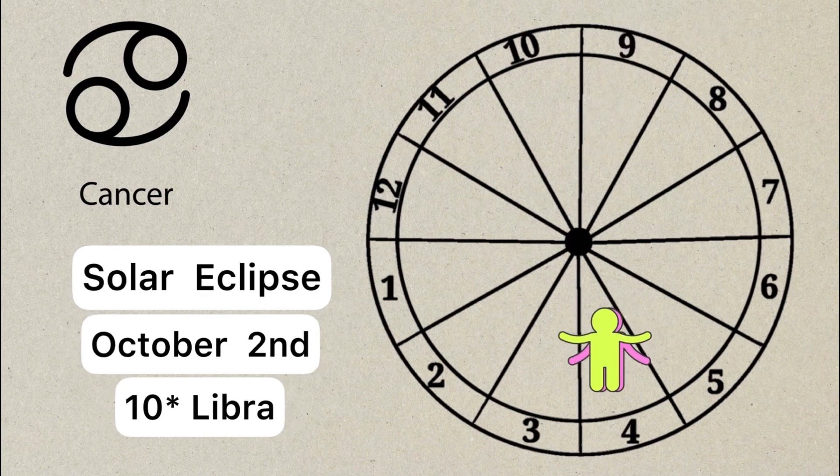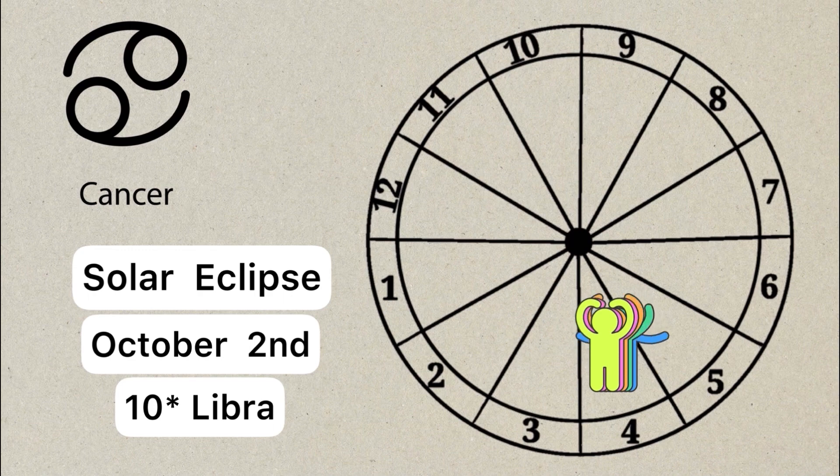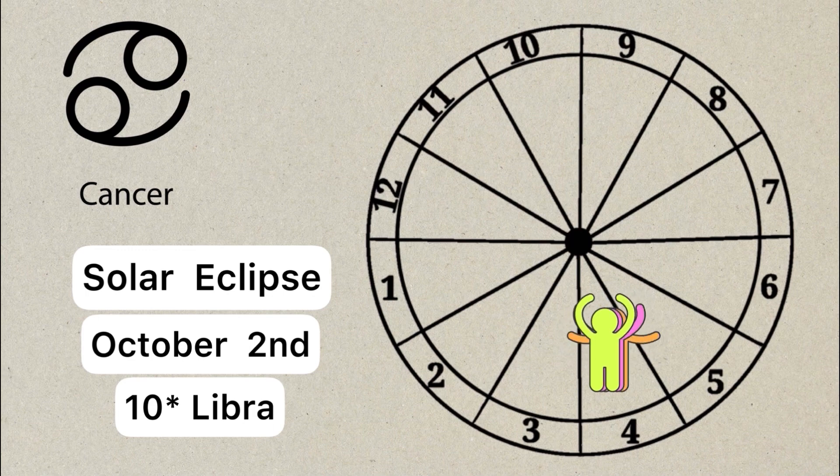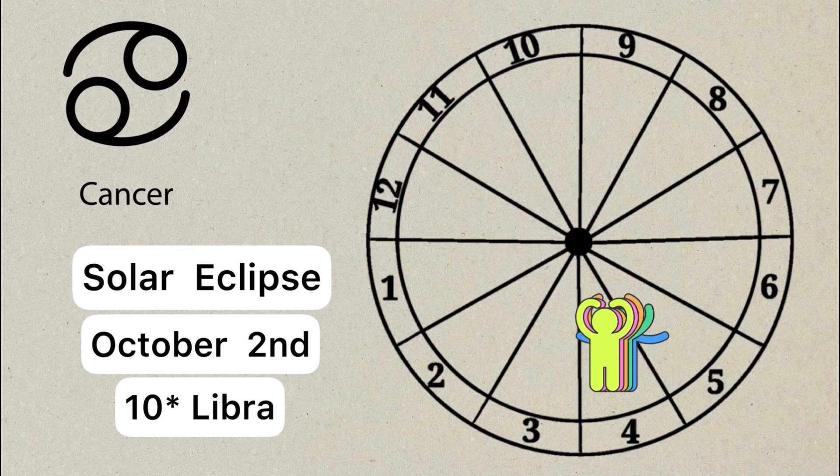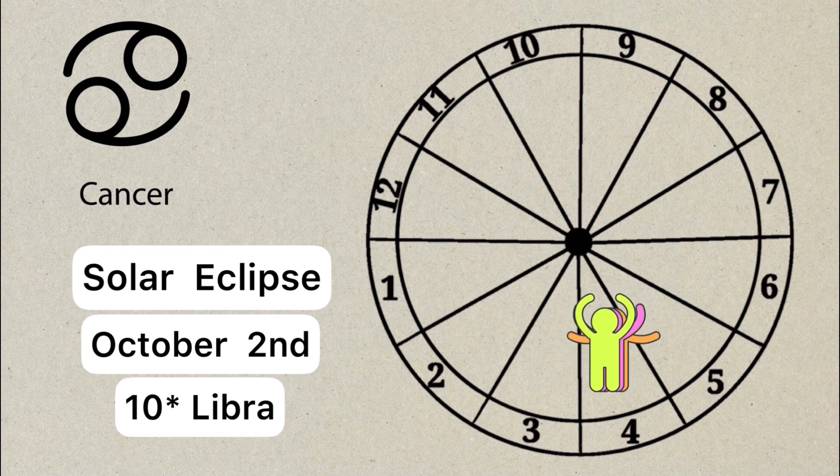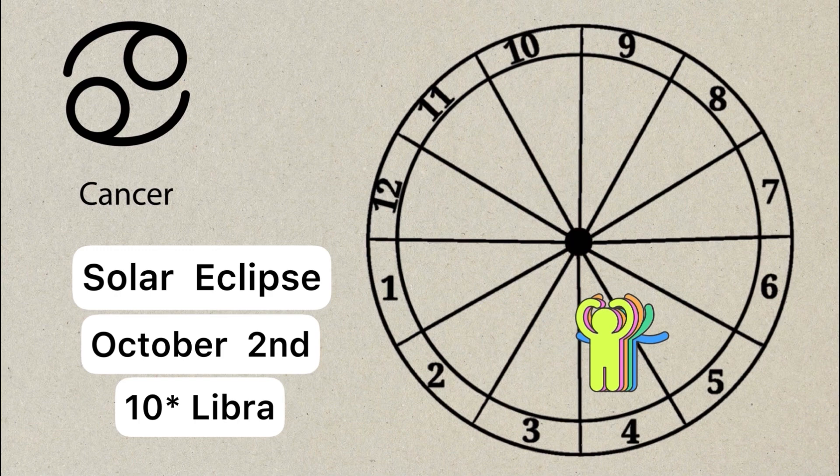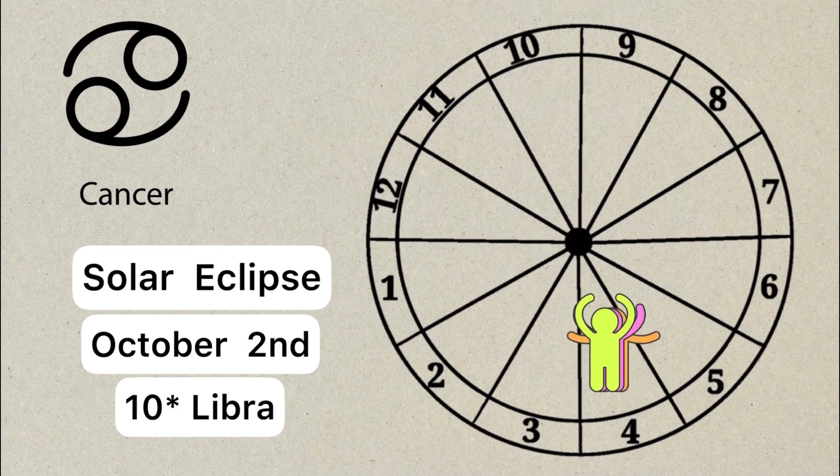The fourth and final eclipse of the year is a solar eclipse, October 2nd at 10 degrees of Libra. If you have any planets or points from 8 to 13 degrees of Libra, even Aries, Capricorn, especially if those are your ascendant degrees, anything from even 10 to 15 degrees of Cancer. If this is your ascendant, this will affect you even more. Or if it's your moon sign, this is happening in your fourth house of home and family.